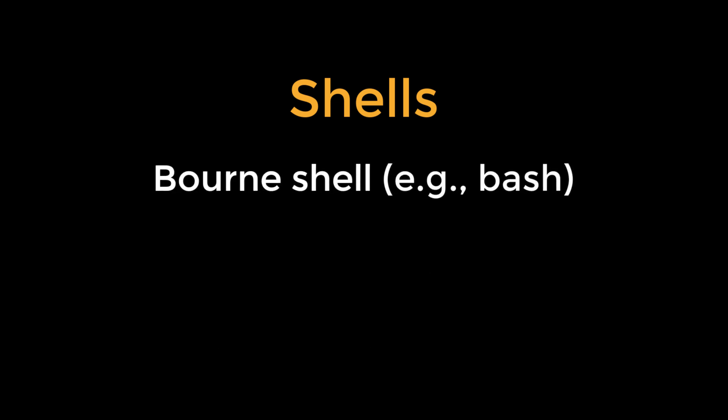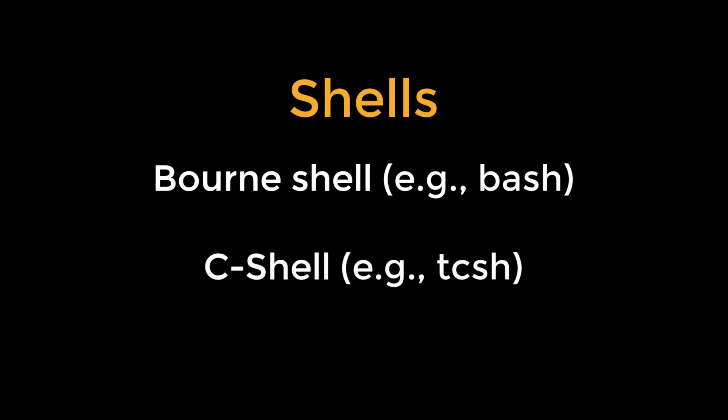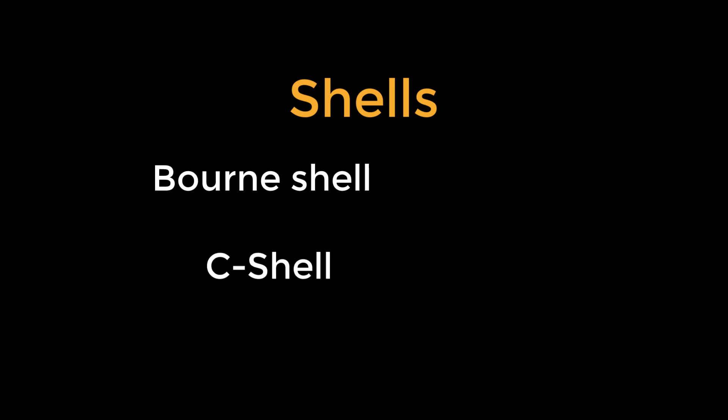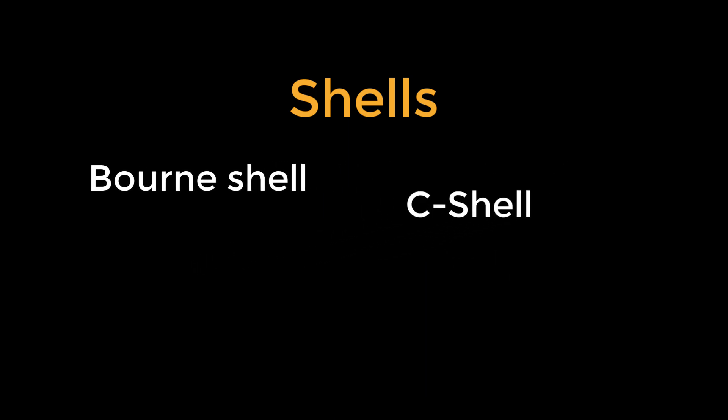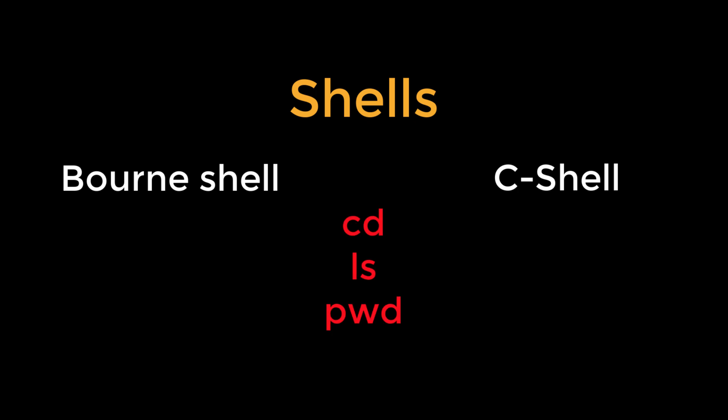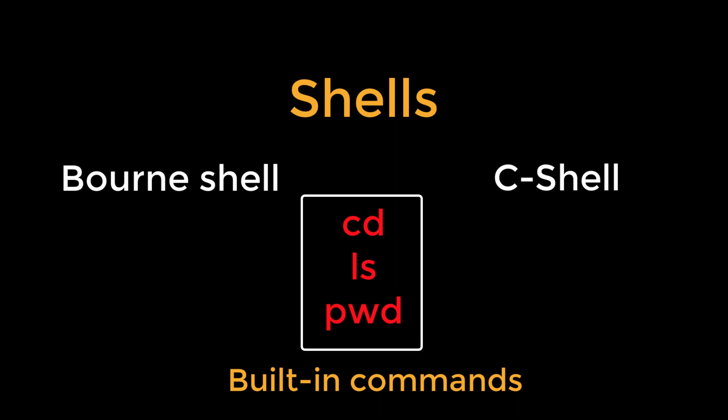For example, there are two major shells: the Bourne shell, with a widely used version called bash, or Bourne-again shell, and the C shell, with one popular variation called the tcsh, or TC shell. The commands we've used so far — cd, ls, pwd, and so on — are called built-in commands, and they can be used the same way in both shells.